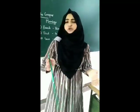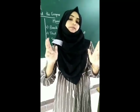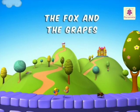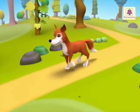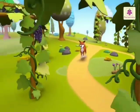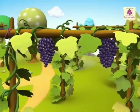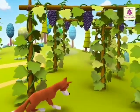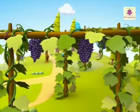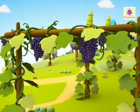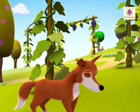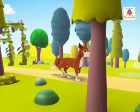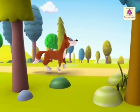Now I am going to show you a small video clip about this story. All of you watch carefully. The fox and the grapes. Once upon a time, a fox saw a bunch of grapes hanging from a vine. He wanted the grapes, so he jumped and jumped again. But he could not get the grapes, so he went away saying the grapes are sour. We often pretend that we do not want a thing when we cannot get it.